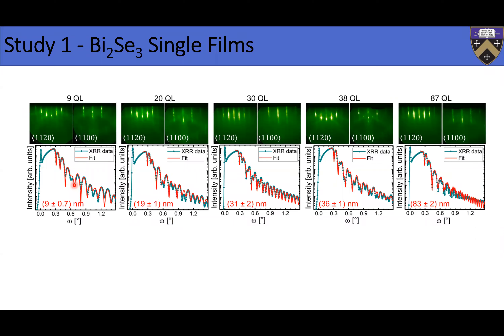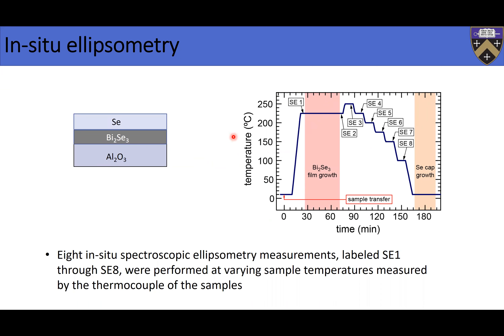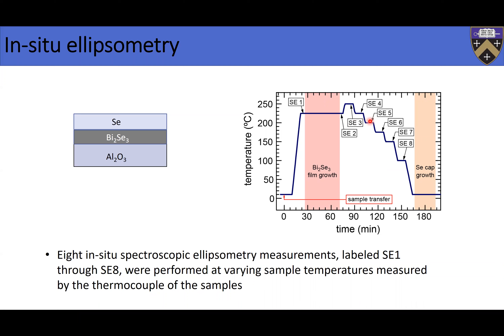For each single film, we performed about eight ellipsometry measurements as the sample was growing. This is the time axis: we load the sample, get it to the growth temperature of 225°C, and with only the sapphire substrate, take an ellipsometry spectrum. Then we grow the bismuth selenide and take SC2 — the second spectroscopic ellipsometry spectrum. After that, we heat to 250°C and leave it for about 10 minutes, take another spectrum, come back to 225°C, take another one, and then reduce temperature by 25 degrees at each step, taking another ellipsometry spectrum each time.